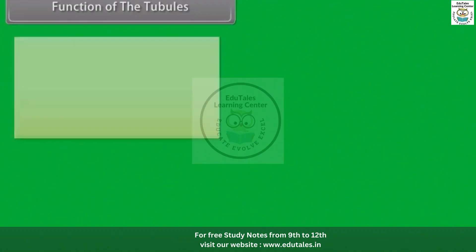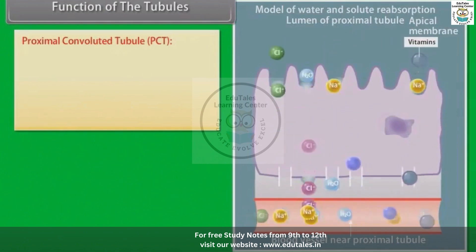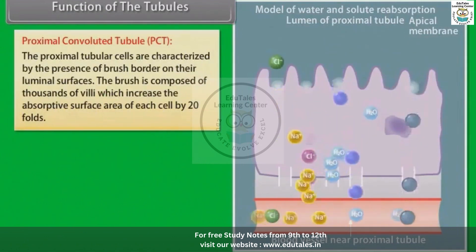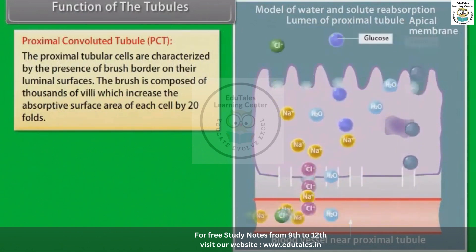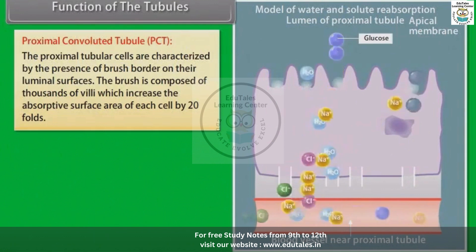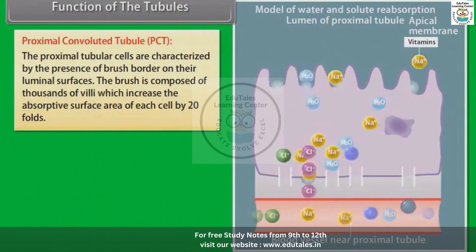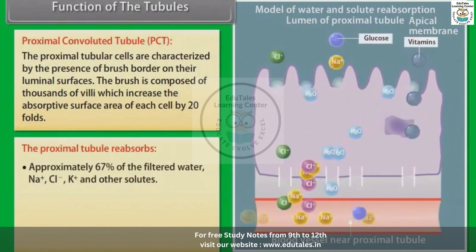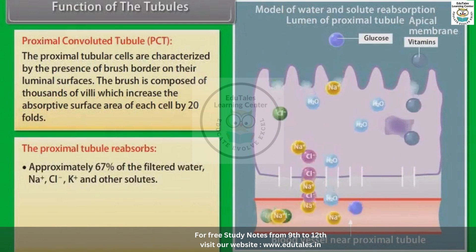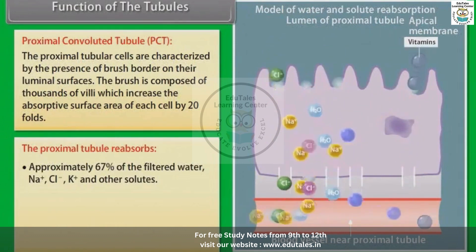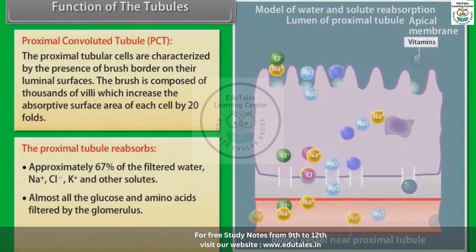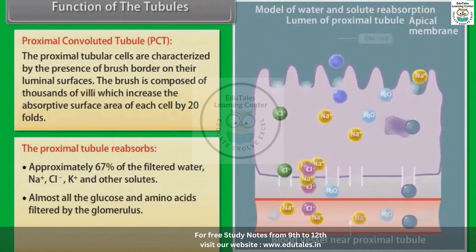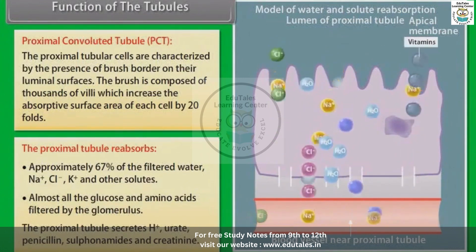Function of the tubules — Proximal Convoluted Tubule (PCT). The proximal tubular cells are characterized by the presence of a brush border on their luminal surfaces, composed of thousands of villi, which increases the absorptive surface area of each cell by 20-fold. The proximal tubules reabsorb approximately 67% of the filtered water, Na+, Cl−, K+ and other solutes, as well as almost all the glucose and amino acids filtered by the glomerulus. The proximal tubules secrete H+, urate, penicillin, sulfonamides and creatinine.